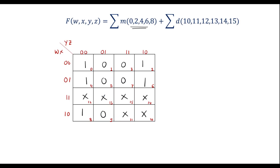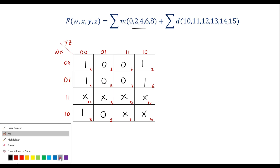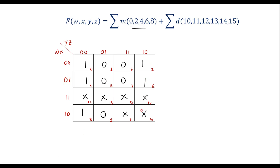In min-term simplification, we have to do the grouping of 1s. The grouping can also be done along with the don't cares. Here we can observe that cells can together make a group of 8. By this single group, all 1s are covered, so we stop doing the grouping.